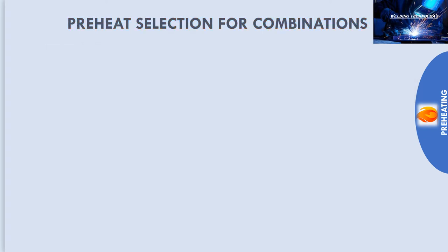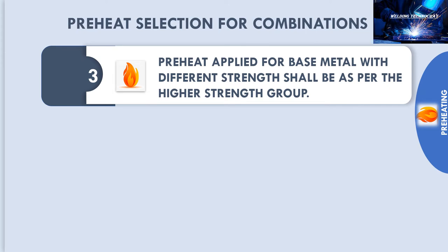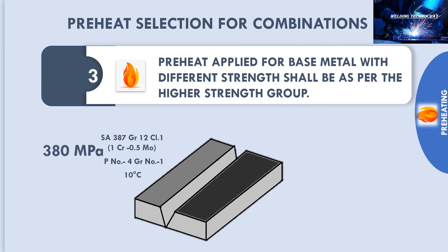The third combination is of different strength. For preheat applied to different base metal of different strength, it shall be as per the highest strength group. For example, one part is P No. 4, Group No. 1, S387, Grade 12, Class 1 — it is 1 chrome half moly with tensile strength of 380 MPa and it has a minimum preheat of 10 degree Celsius.